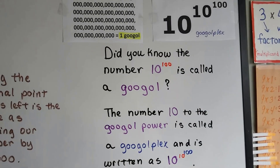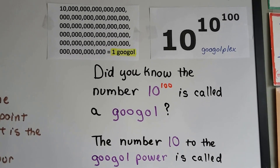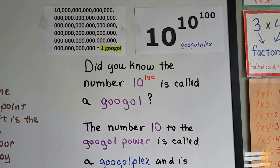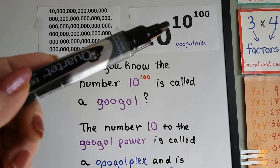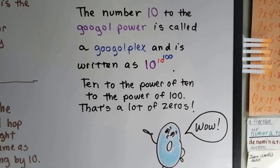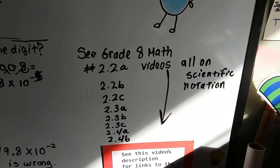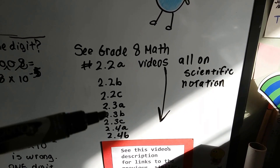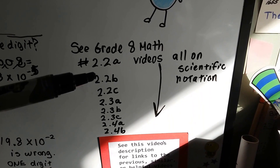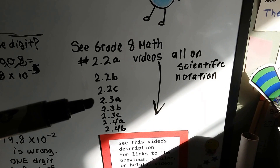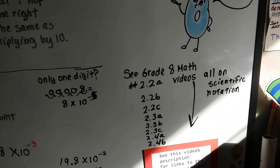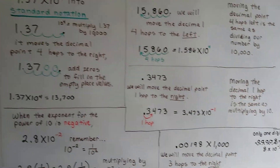Did you know the number 10 to the 100th power is called a Googol? The number 10 to the Googol power is called a Googleplex. So if you've got 10 to the 10th power raised to the 100th power, that's a Googleplex — 10 to the power of 10 to the power of 100. That's a lot of zeros! You can see my Grade 8 Math video playlist — there'll be a link in the description. Those videos cover scientific notation: the introduction, how to write scientific to standard, standard to scientific, how to add, subtract, multiply, and divide. The Grade 8 math does a lot of Algebra 1 in it, so you can look at that playlist for help.